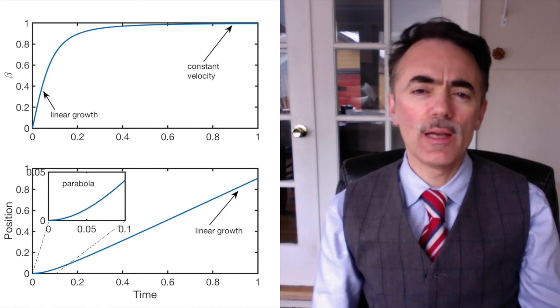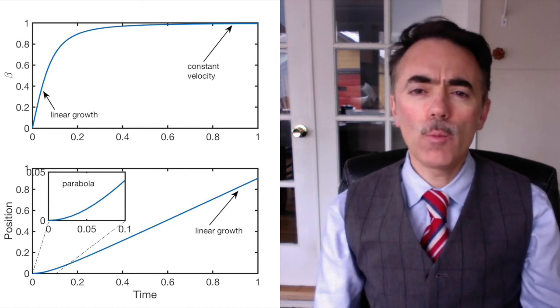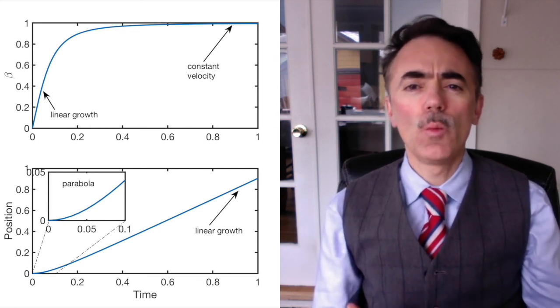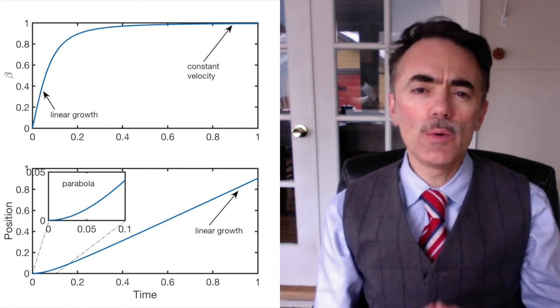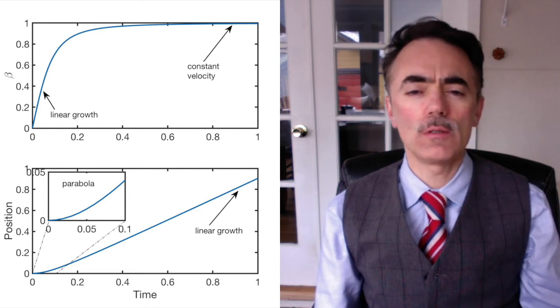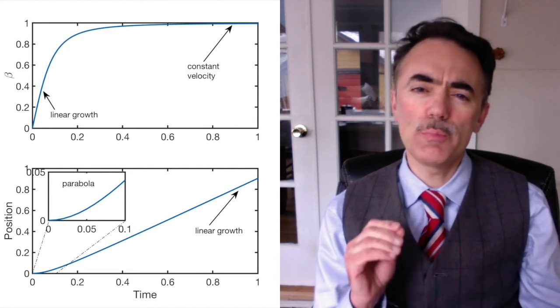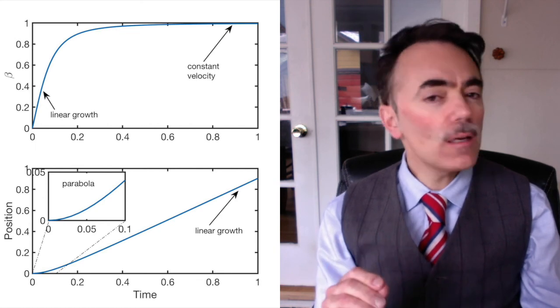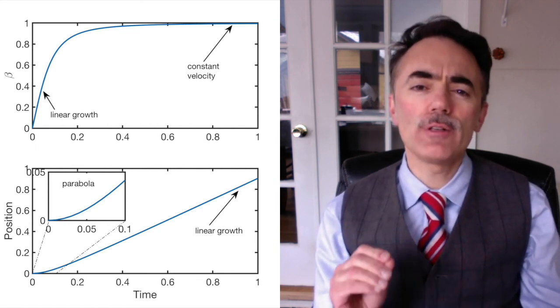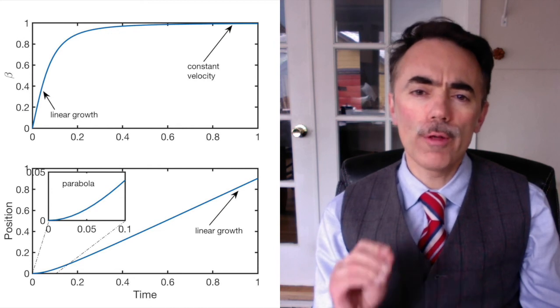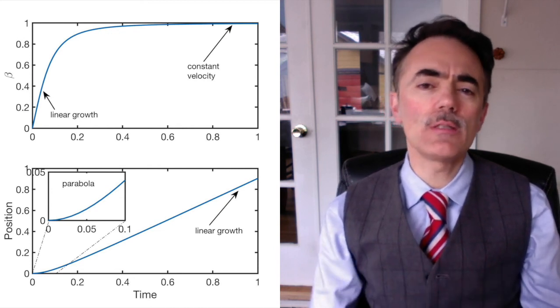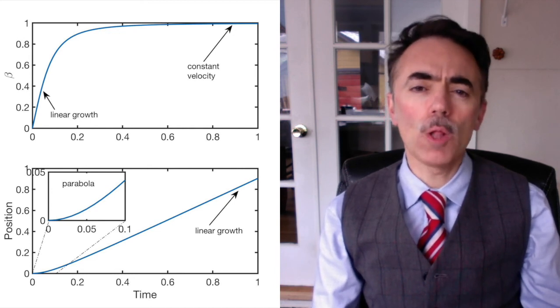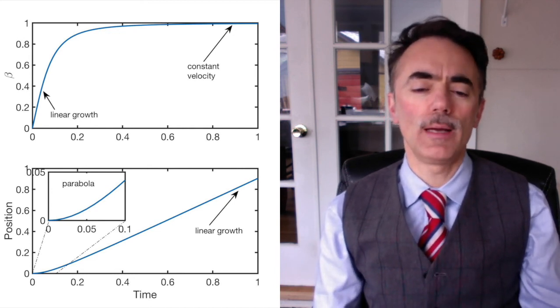We can plot these results — velocity and position — as a function of time, and we can see how initially we are in the classical regime, but for longer times we reach that limit of constant speed of light. The astronauts experience a constant acceleration, but they never travel faster than light. From Earth, their acceleration is not constant — it decreases until it is zero — and they travel almost at the speed of light.